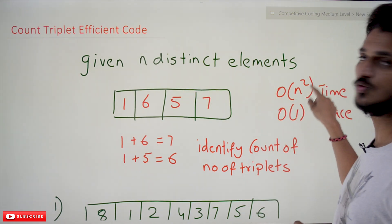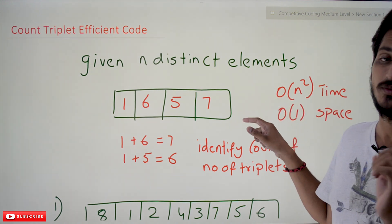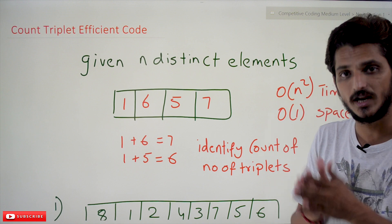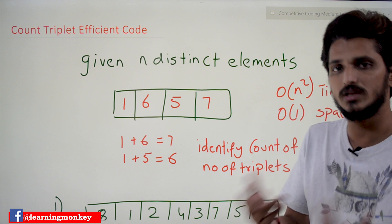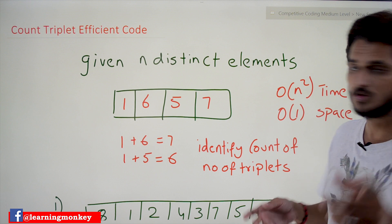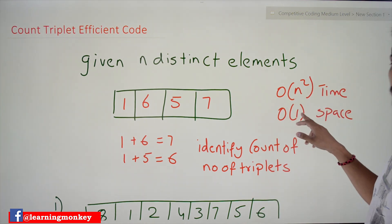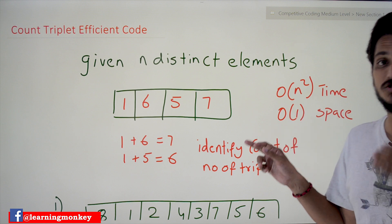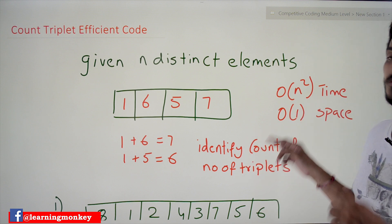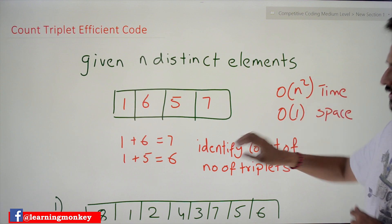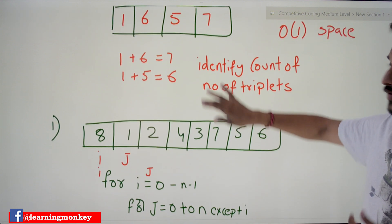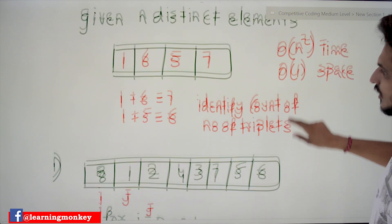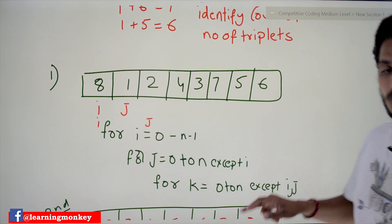You have to solve this in O(n²) time — that is very important. If you solve it in O(n³) time, writing the code is very simple, but you must solve it in O(n²) time. The space complexity should be O(1), meaning you should not use extra space. Now let's first understand how to write the code without that constraint, then go into the O(n²) approach.